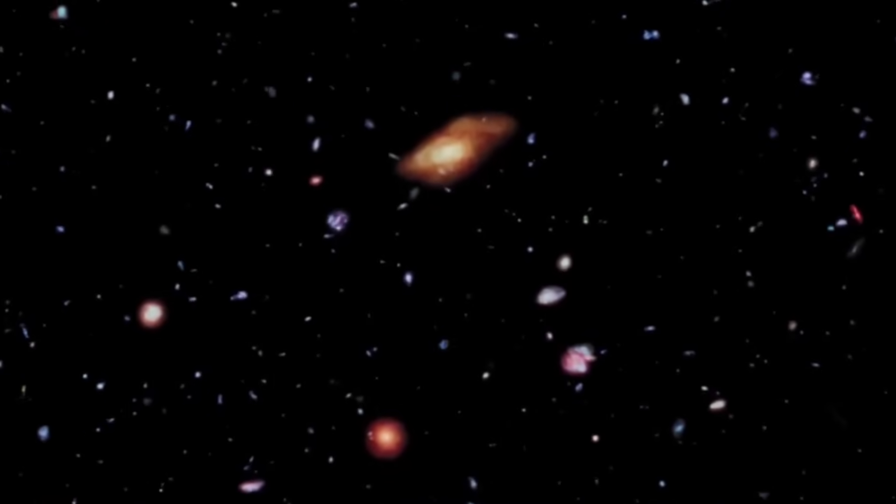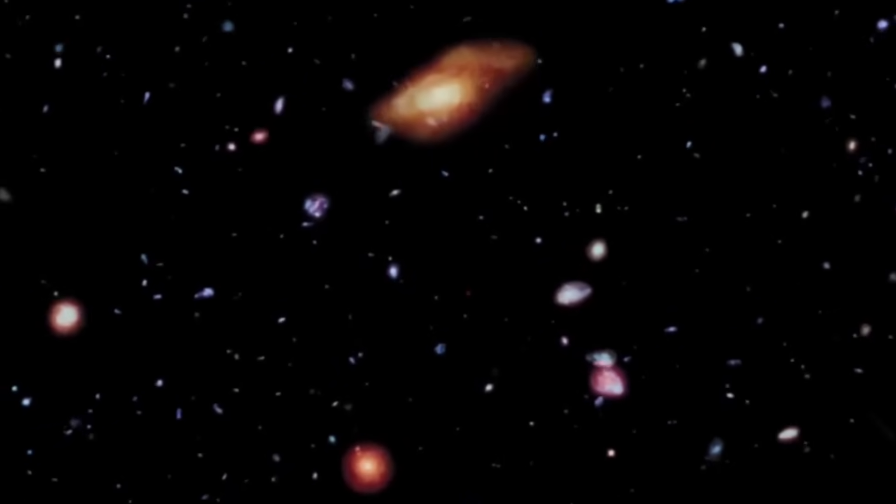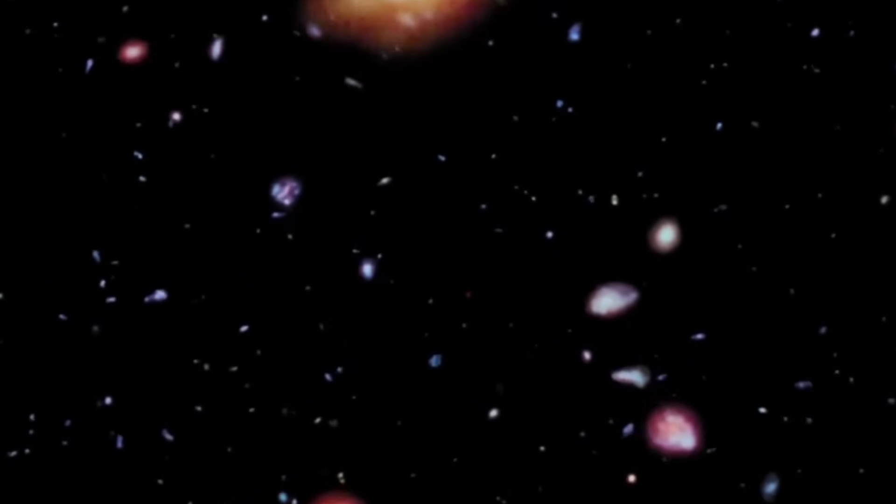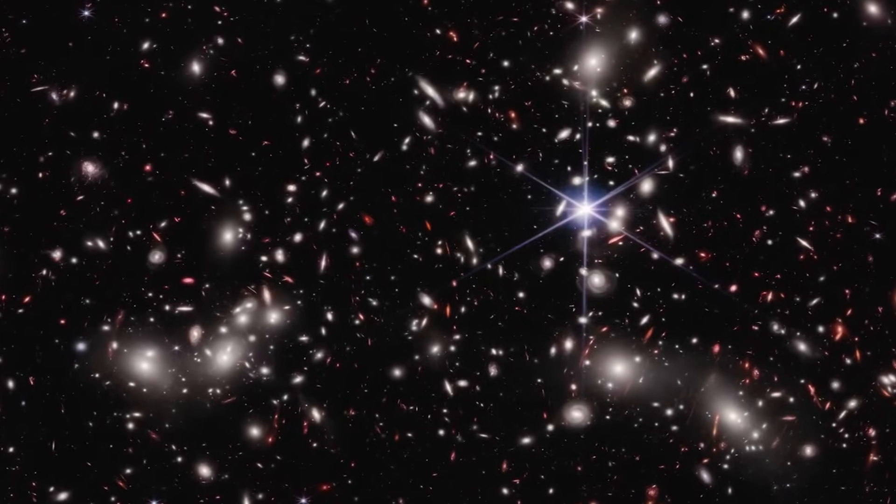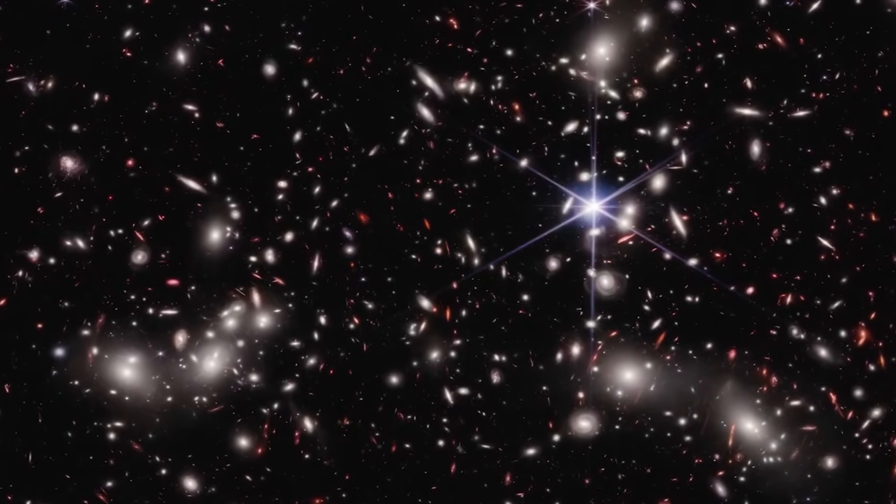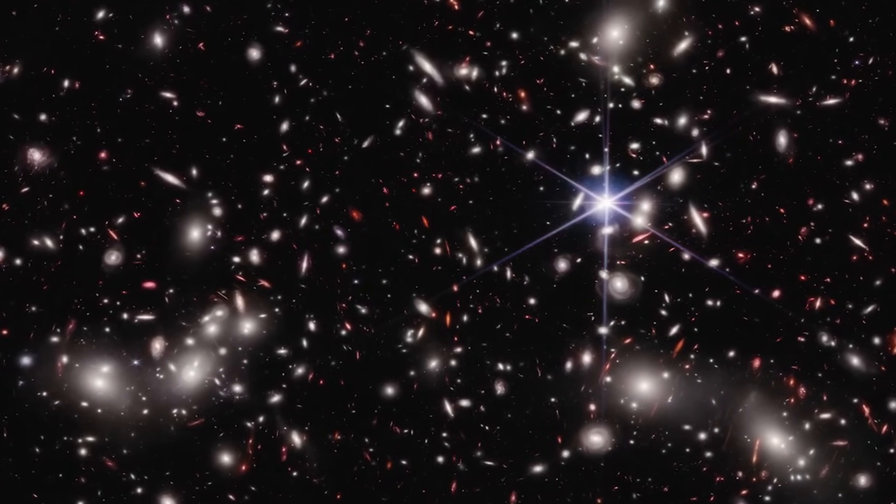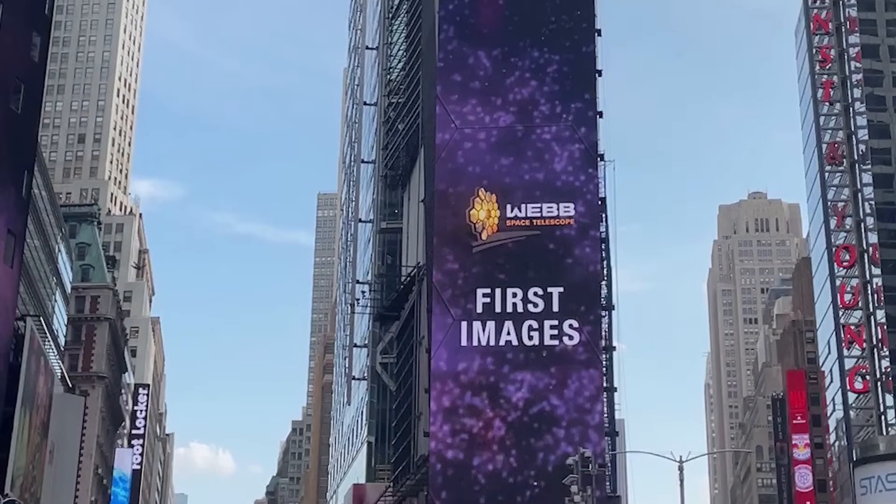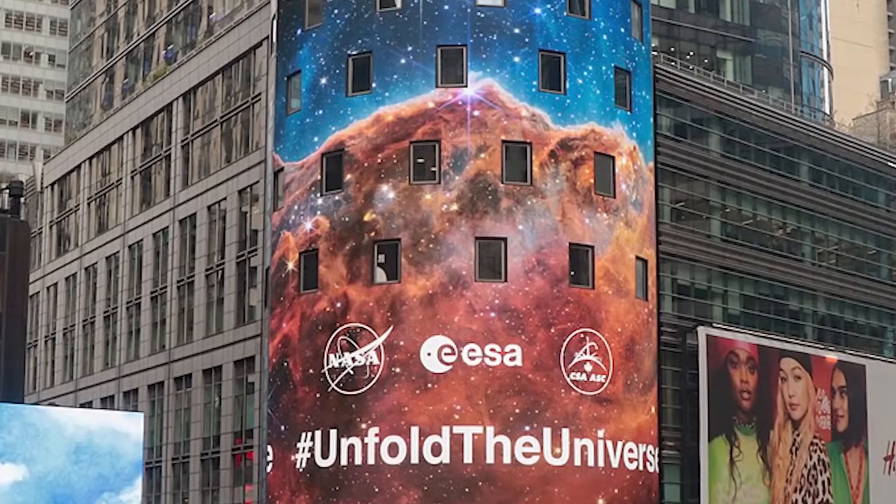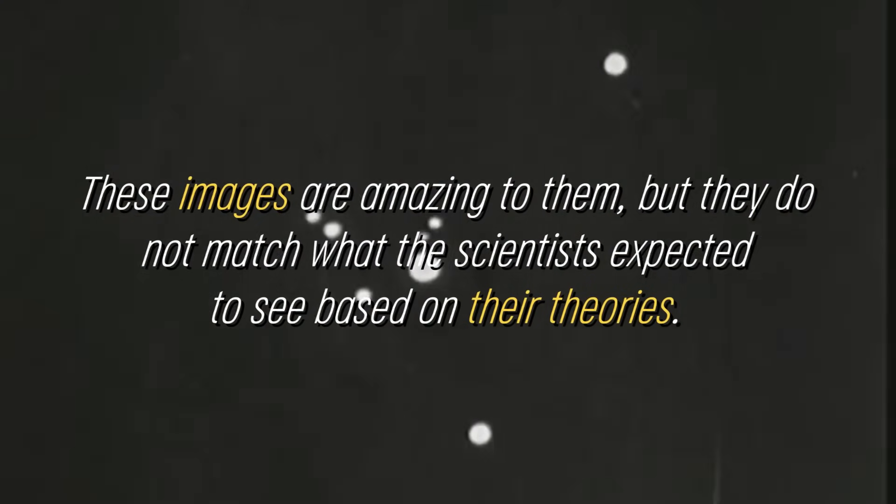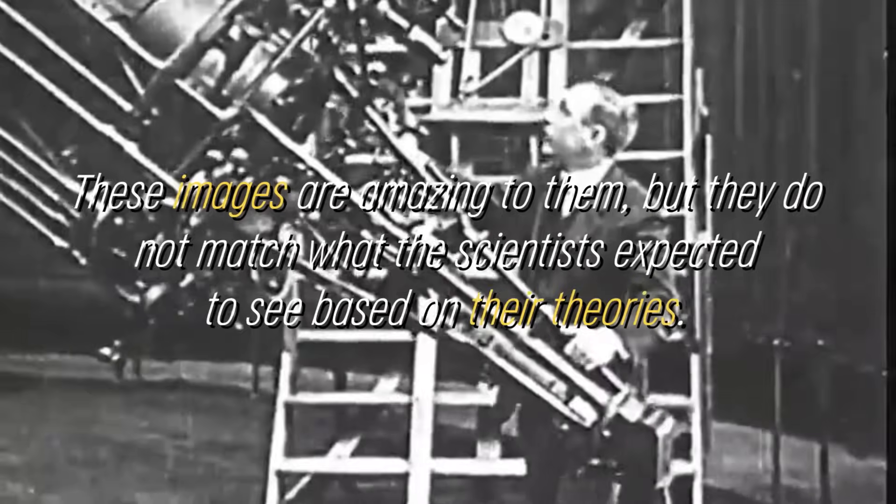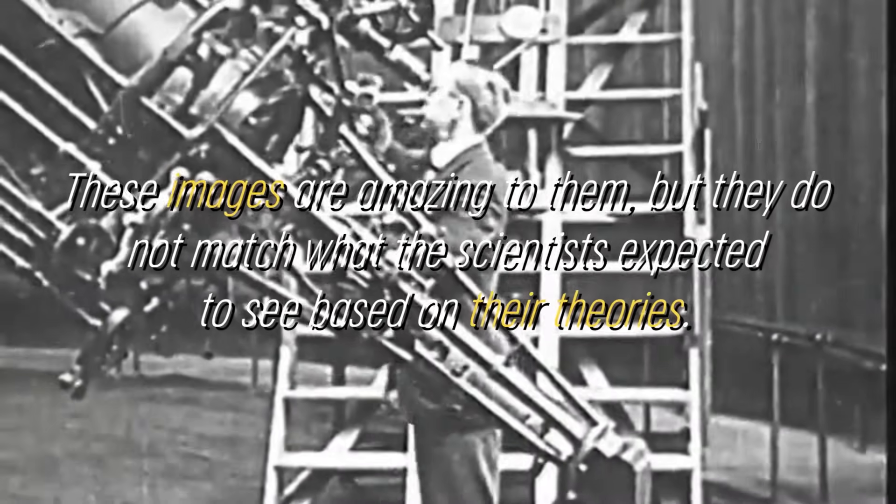The images of new galaxies captured by the James Webb Telescope are absolutely stunning. In a single image, we can see hundreds of galaxies, all together, and the beauty and power of these photos are stunning. However, what seems to amaze the average person is precisely the opposite for researchers. These images are amazing to them, but they do not match what the scientists expected to see based on their theories.